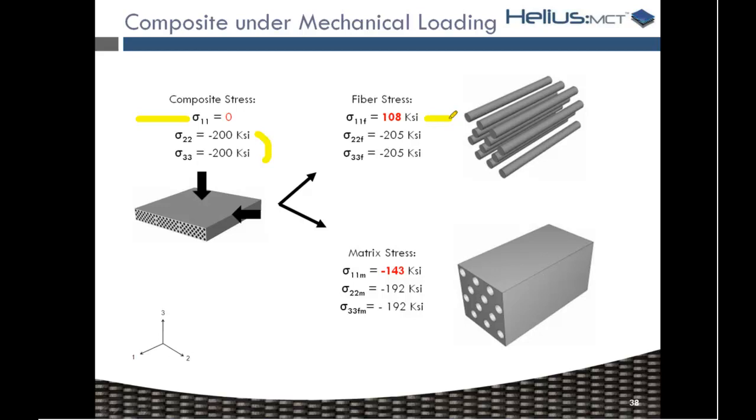You'd find that the actual fiber stress in the one direction is in a tensile case. Now, what might that be? And if we go back to our visualization here where we're squeezing this eraser, the matrix, of course, has a much lower modulus, so it will squeeze out in the one direction and it will essentially pull the fibers with it. So we're not surprised to see that we have a tensile scenario in the one direction.